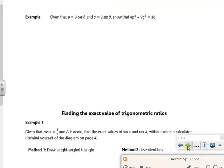Right then, so we've got a question. It's quite nice, it's been a lot of waffle so far, not much question going on. So it tells you that p is 3 cos θ and it tells you that q is 2 sin θ. Show that.